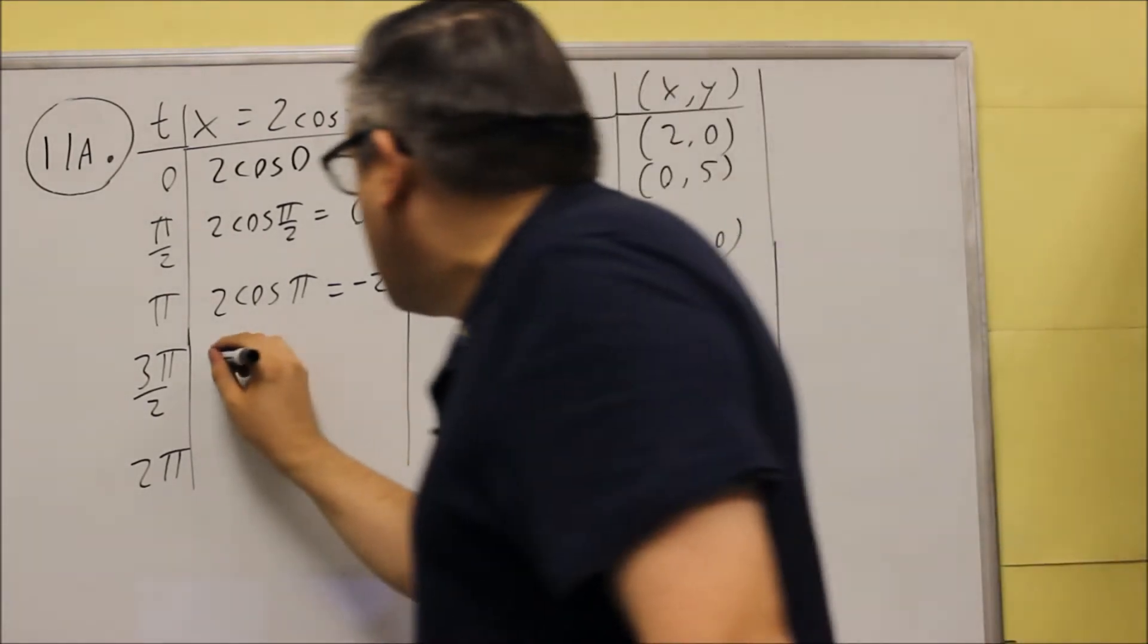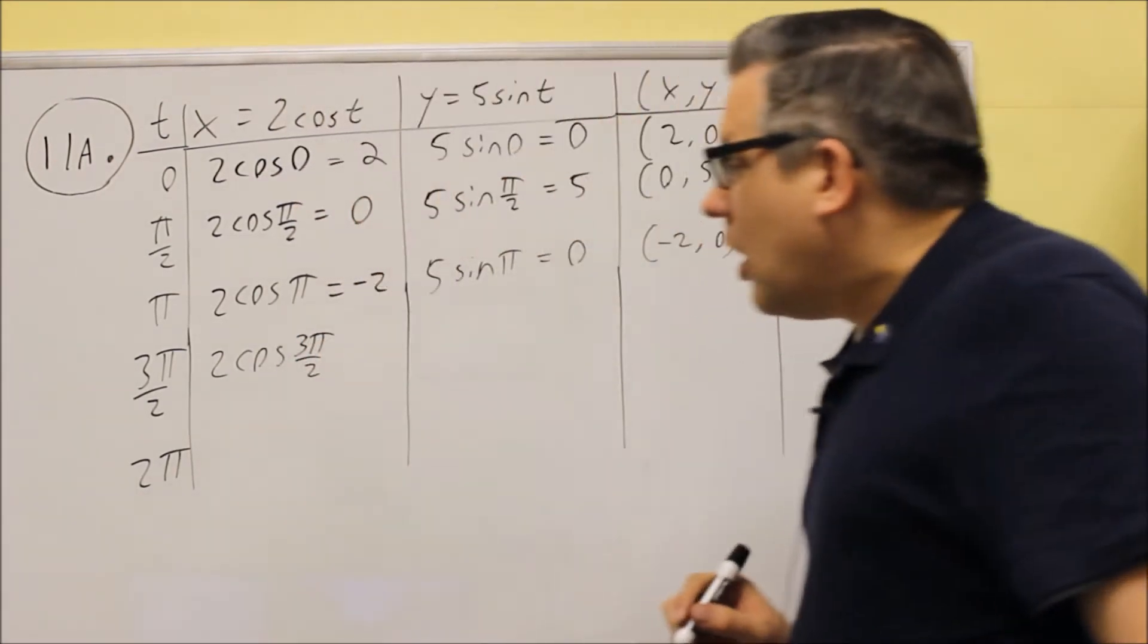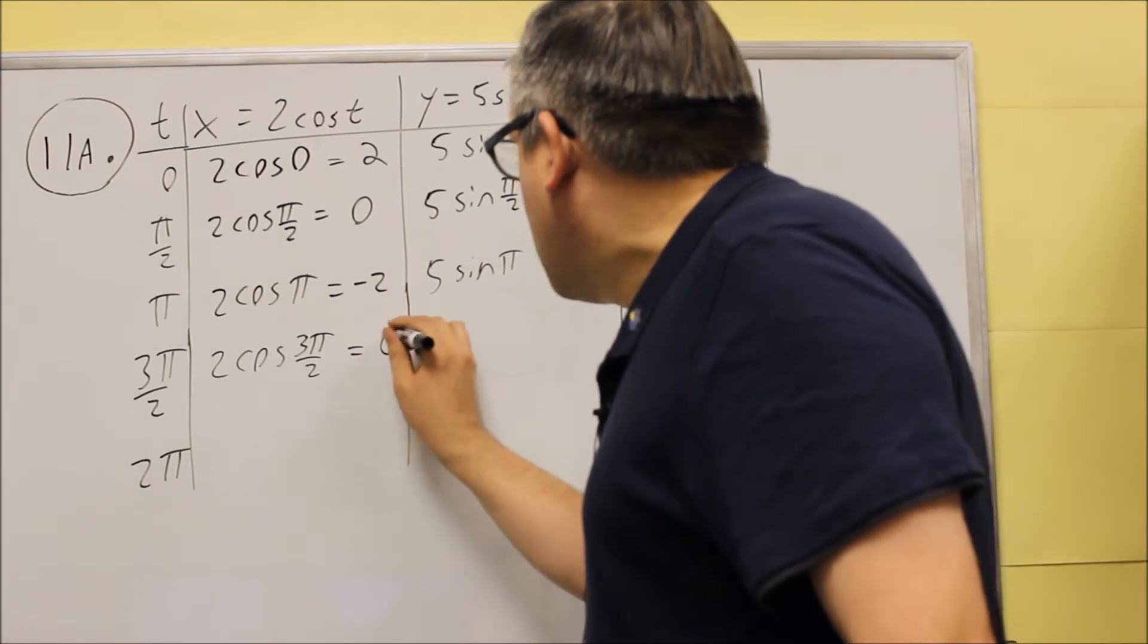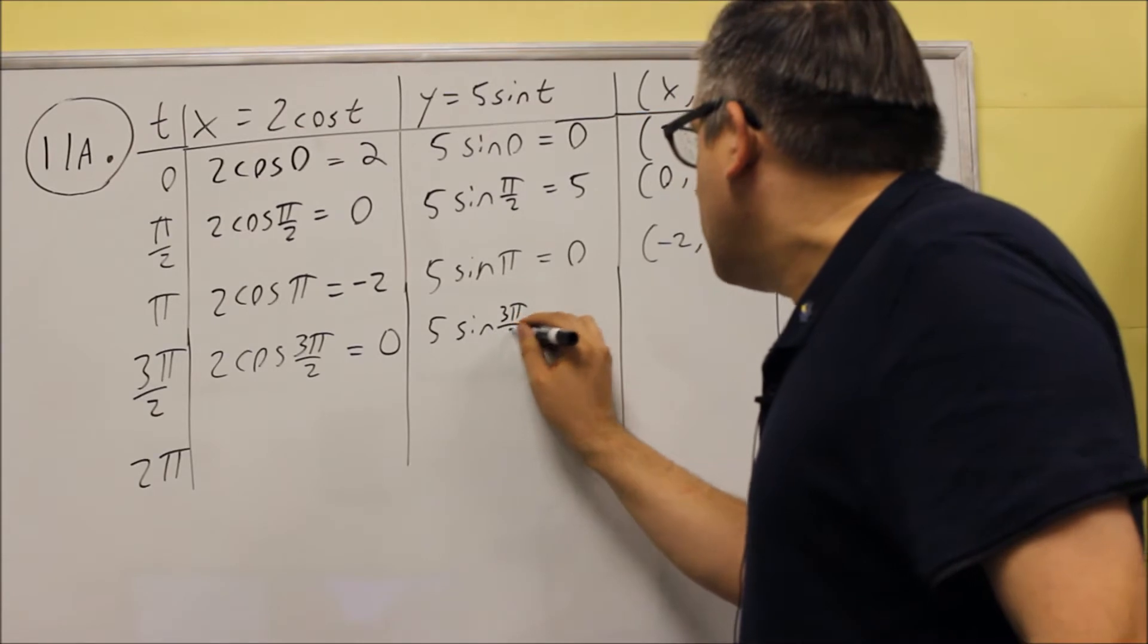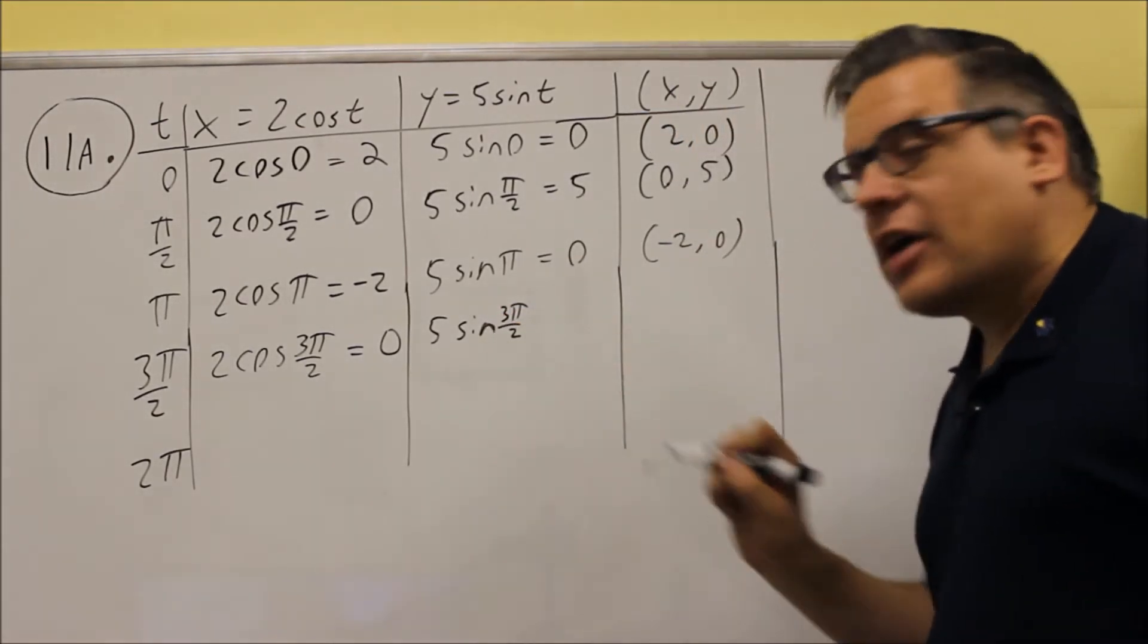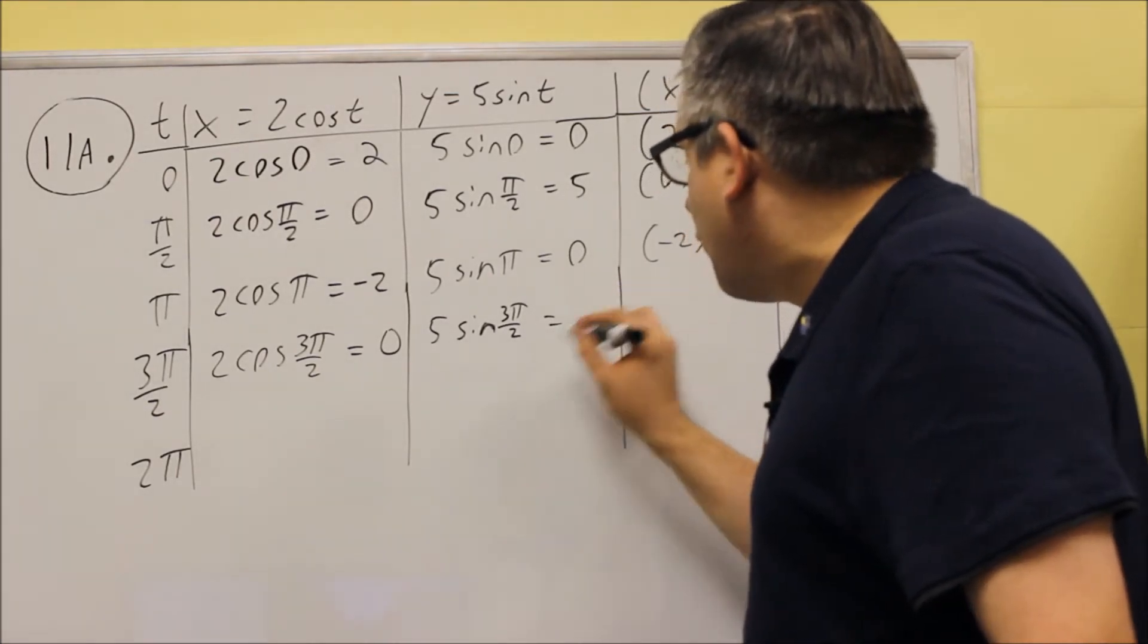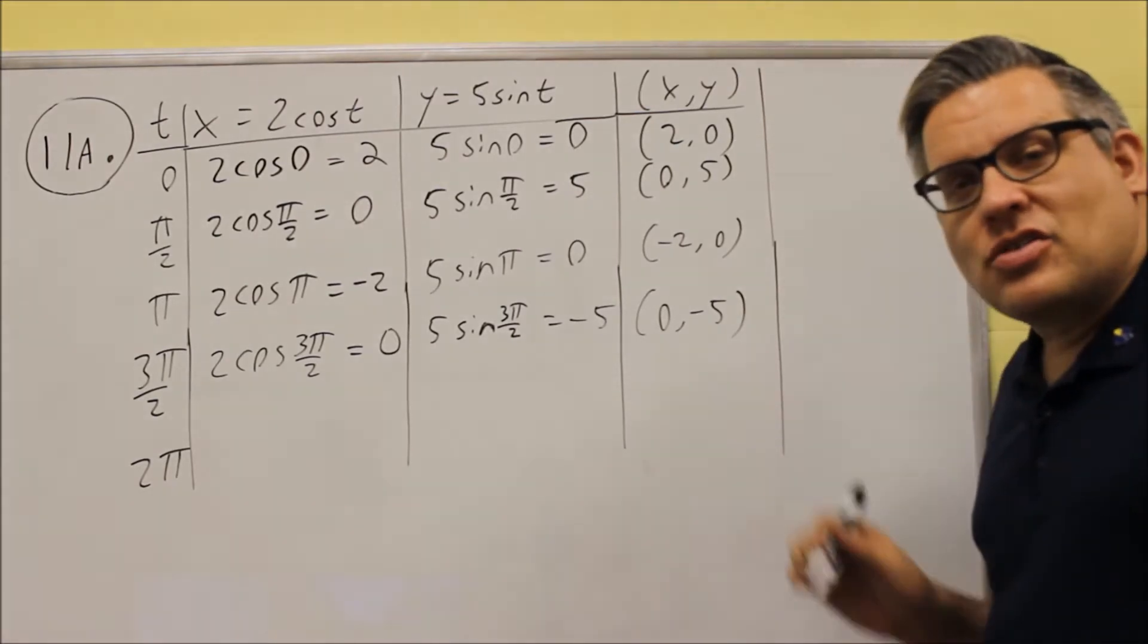Next is three pi over two, two cosine three pi over two. The x value at three pi over two, that's at 270 degrees, that's zero. Zero times two is zero, and we're going to do five sine three pi over two, so you should have a unit circle here, that's what I'm getting all these values from. Sine of three pi over two, the y value at 270 degrees is negative one, and so five times negative one is negative five. So zero, negative five is the next coordinate.